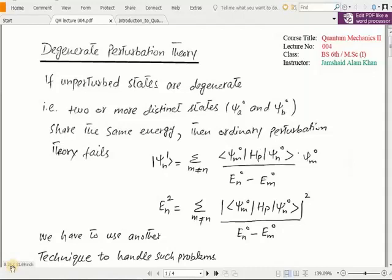Bismillahirrahmanirrahim, assalamu alaikum BA students. We are studying the course Quantum Mechanics 2, this is lecture number 4 for philosophy of 6 semester at MSE part 1. I am your instructor Jamshir Anapran. Today we are going to study about degenerate perturbation theory.